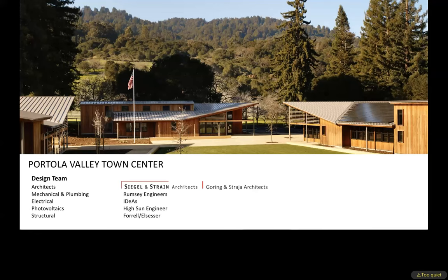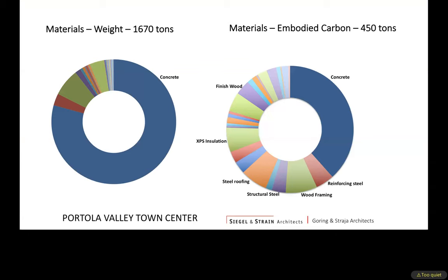The first time I really understood the importance of embodied carbon was on the Portola Valley Town Center project — a LEED Platinum project, very energy efficient, built with a conscious effort to use low-impact, low-carbon materials. We went back after the fact and calculated all the carbon emissions from building the project. To calculate emissions for materials, you first have to know how much everything weighs. The first lesson was that concrete weighs a lot.